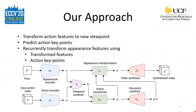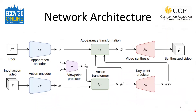Our approach is to extract a feature encoding from both the input video and appearance prior. We predict the viewpoint change, transform the action features accordingly, and predict action key points. The transformed action features and key points are used to produce transformed appearance features from which the new video is synthesized. Now, let's take a closer look at the network architecture.